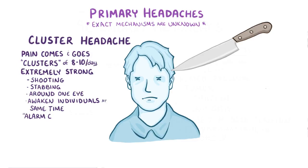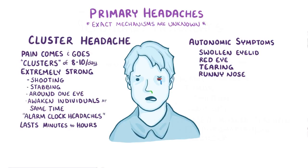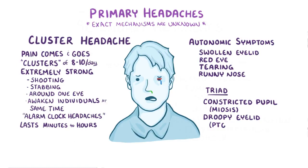Each cluster of attacks can last from minutes to hours and comes with autonomic symptoms like a swollen eyelid, red eye, tearing, or a runny nose. Some individuals develop a certain triad of symptoms: a constricted pupil or miosis, droopy eyelid or ptosis, and decreased sweating or anhydrosis. Together, this is called Horner's syndrome.